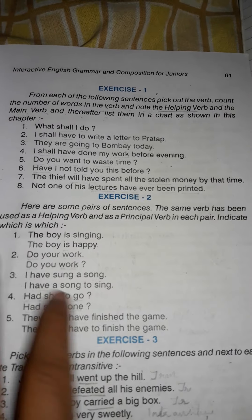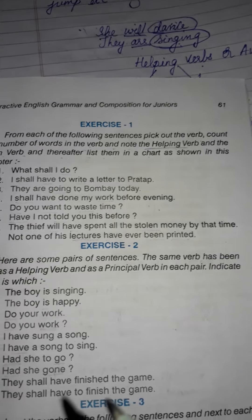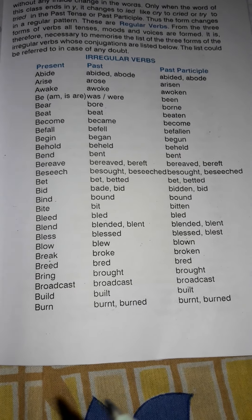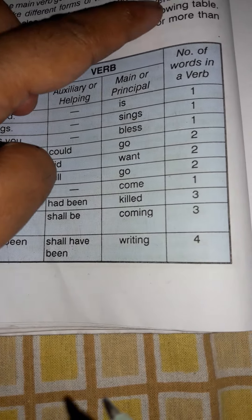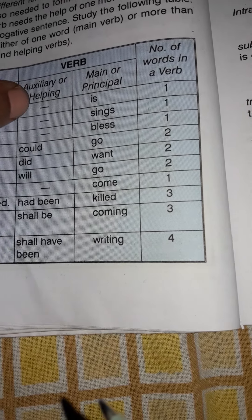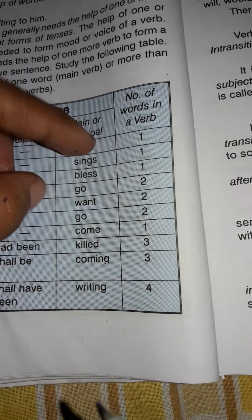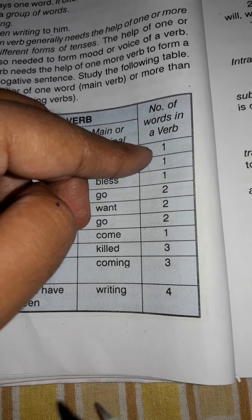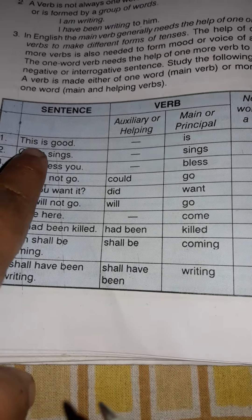Here you have an exercise to do. What you have to do is make a box like this for Exercise 1. The columns should be: sentence, verb, auxiliary or helping verb, main verb (also called principal verb), and number of words in the verb.